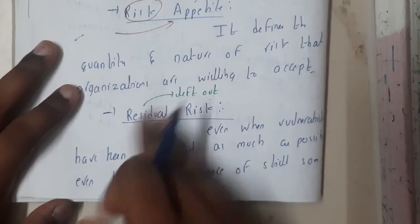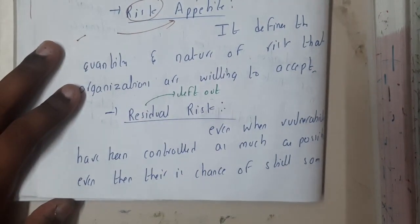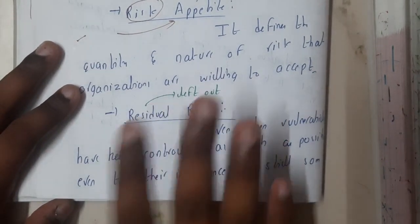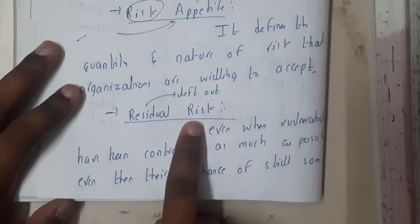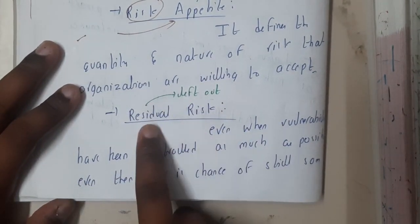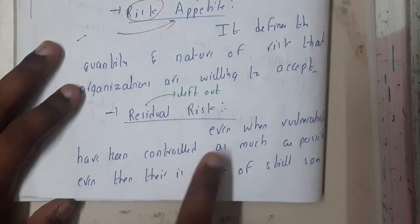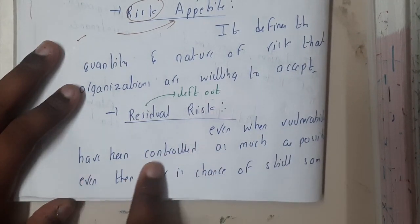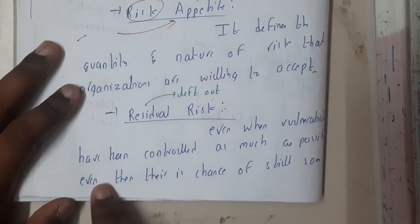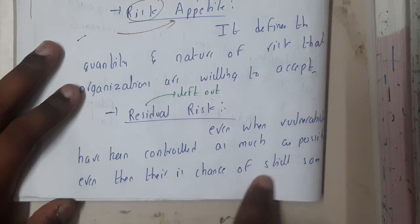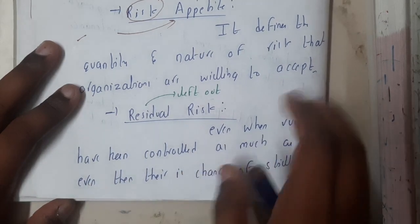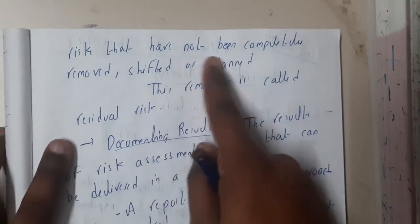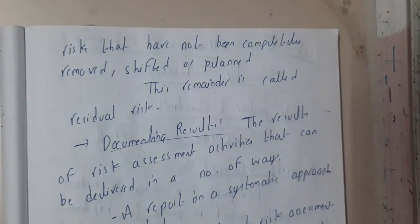Risk appetite defines the quantity and nature of risk that an organization is willing to accept, based on your requirements and acceptance criteria. Similarly, residual risk — 'residue' means what is left out. Even when a vulnerability has been controlled as much as possible, there is still a chance of some small vulnerability or risk existing.